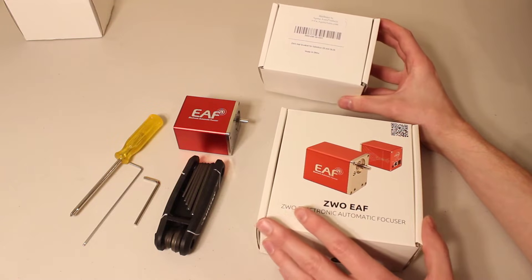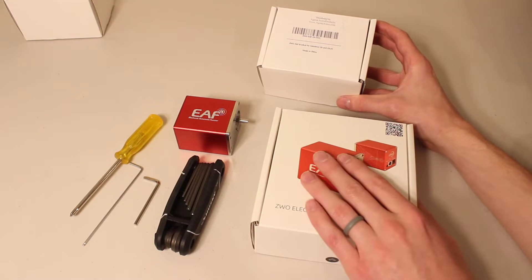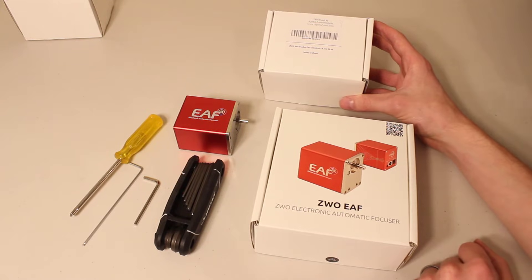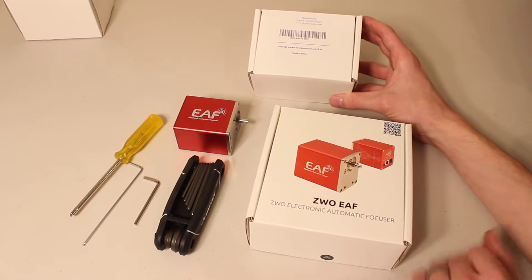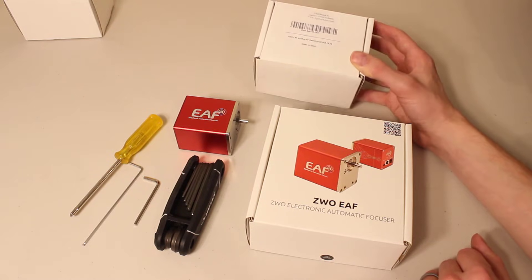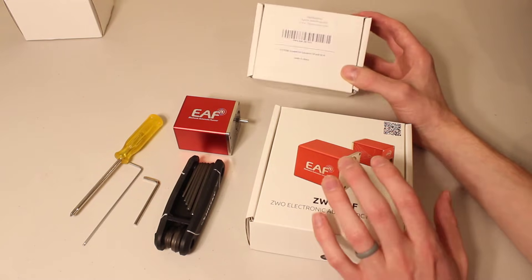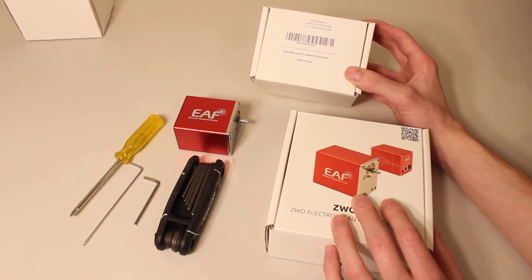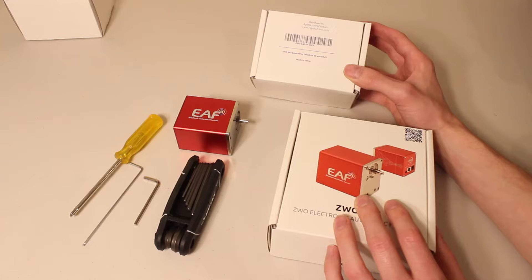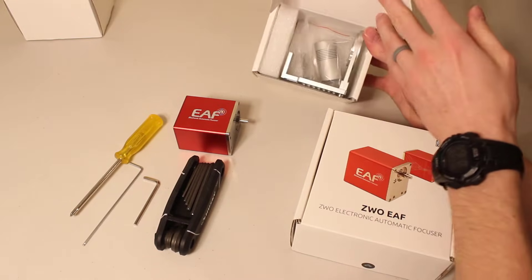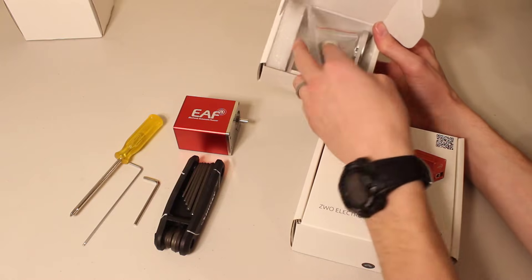A lot of people have been using 3D printed parts to attach their EAF to their Schmidt-Cassegrain, and I'm sure it's worked well for them, but I'm just a bit paranoid to put this nice product on there with a 3D printed part. So it's really nice to see that ZWO has come out with this bracket. Opening it up, you get a bracket, a coupler, and the hardware that you need.